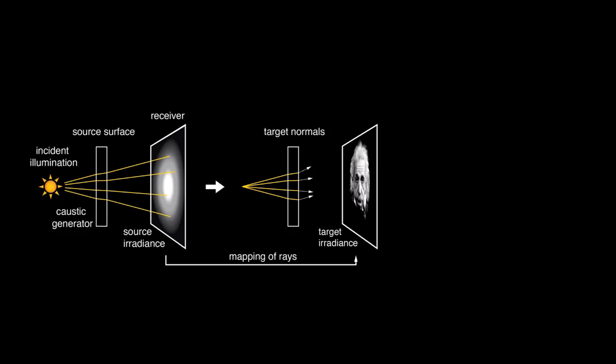This gives us a mapping between the rays currently hitting each point on the surface and where the rays should be redirected to on the target plane, resulting in a target normal field.